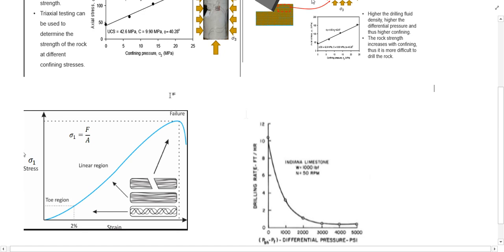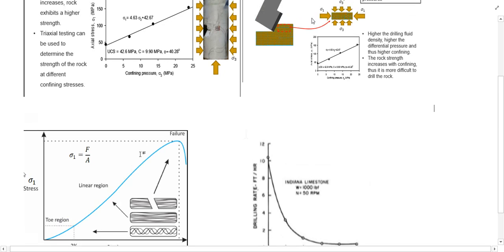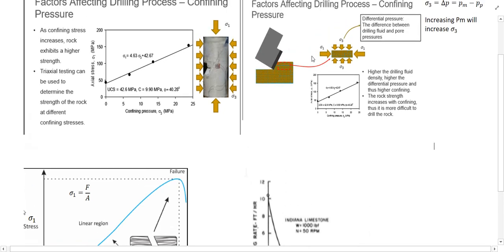This failure is the cutting or drilling of the rock. Now consider that we apply confining pressure, which we show with Sigma 3. It's like we are putting some support around this rock, so the rock exhibits a higher strength. It will be more difficult to drill when we are applying confining pressure.